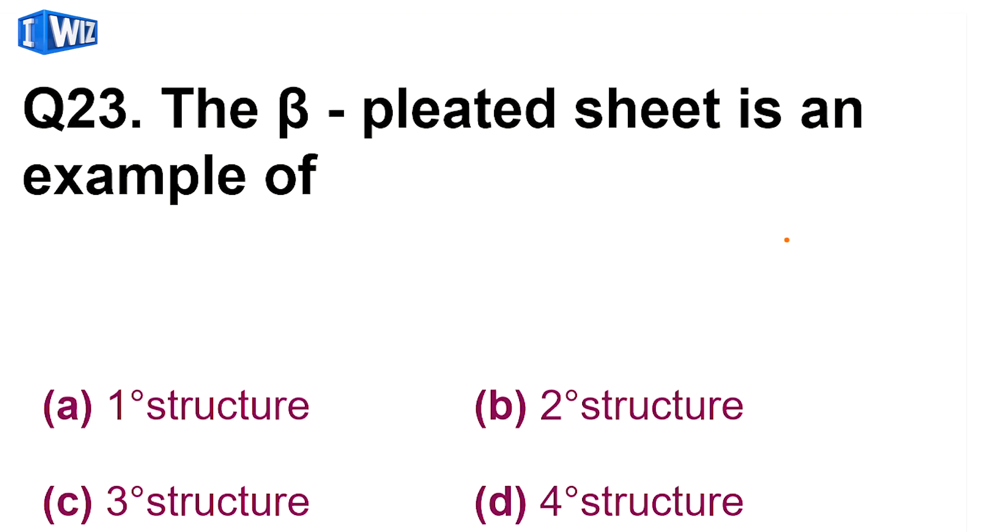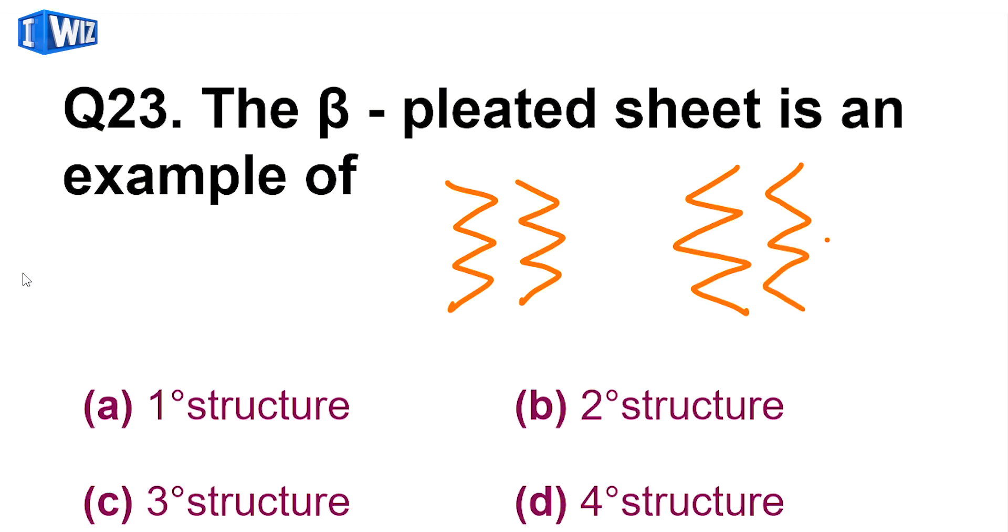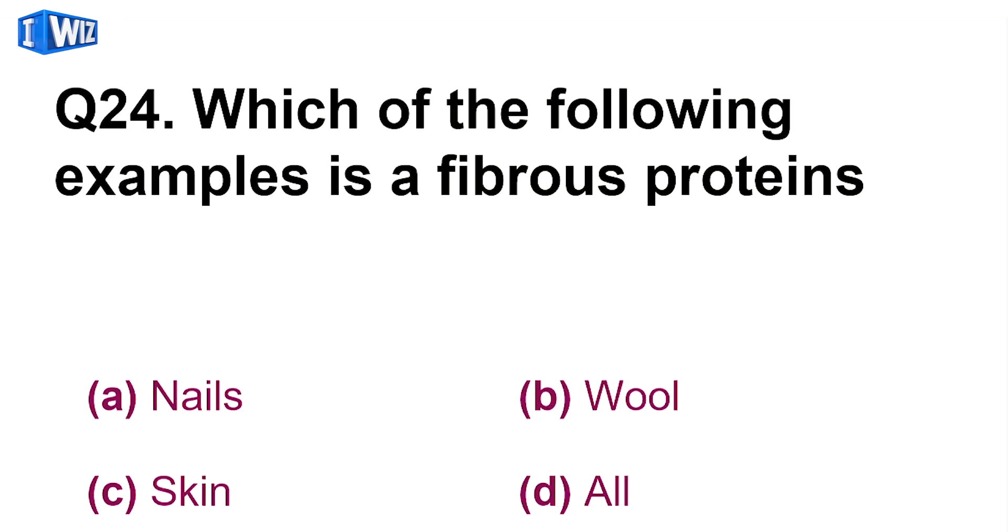Next is, the beta pleated sheet is an example of - so beta pleated sheet mein kiya hoota hai, ki yeh joh pleats hain, saari ki draperi ki tarah, is tarah se pleated form mein, amino acid ki chain present hooti hai. Aur apas mein jo carboxyl group ka C double bond O hai, aur amine group ka NH2 group hai, yeh apas mein hydrogen bond isse stabilized hooti hai. So yeh joh beta pleated hai, yeh secondary structure hoota hai. So B is the correct answer.